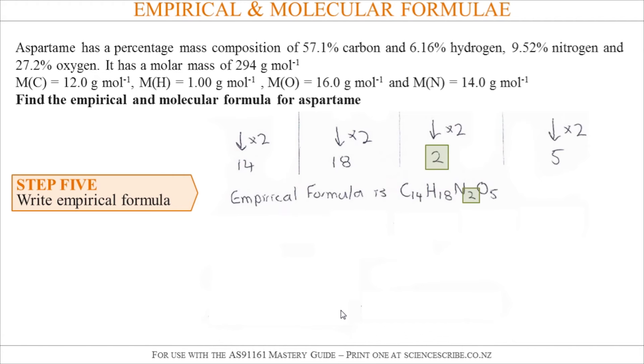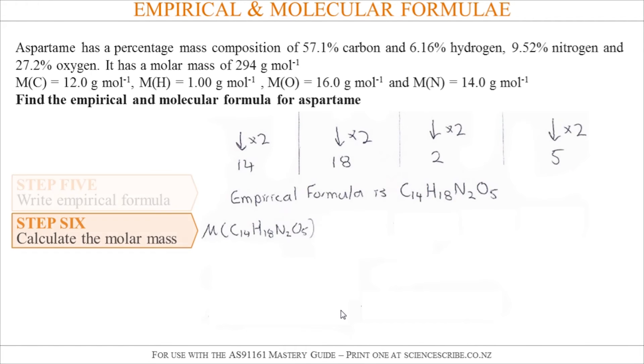Onwards to starting on how to write the molecular formula. We start by taking the molar mass of our empirical formula. So that's 14 carbons in there and the molar mass of carbon's 12, so 14 times 12.